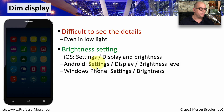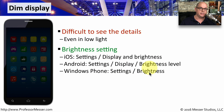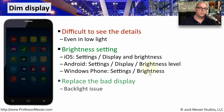Under Android, it's under Settings, Display and Brightness level. And in Windows Phone, it's under Settings and Brightness. If the problem still exists and you're not able to get the display bright enough, it could be a backlight problem. In that case, you'll have to replace the entire display part of the mobile device.